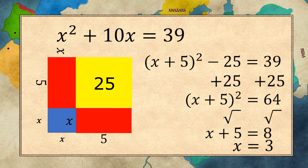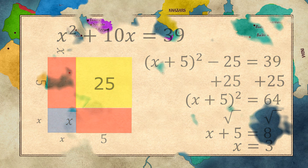It is interesting to note that when you find the square root of 64 you get positive and negative 8. But during Al-Khwarizmi's time there was no conception of negative numbers.